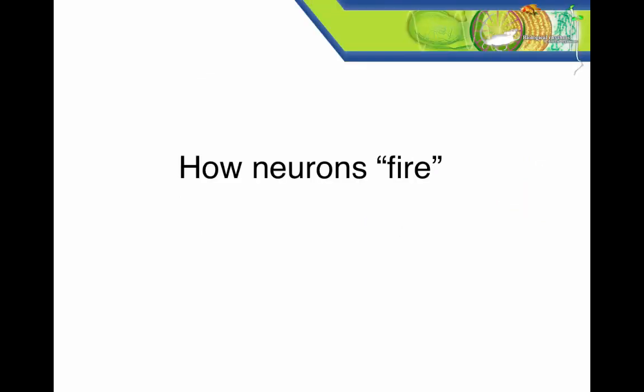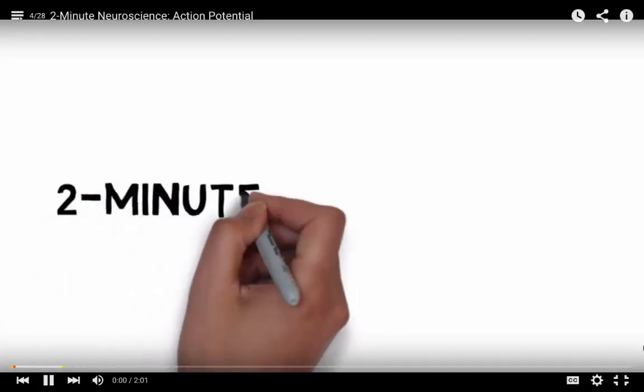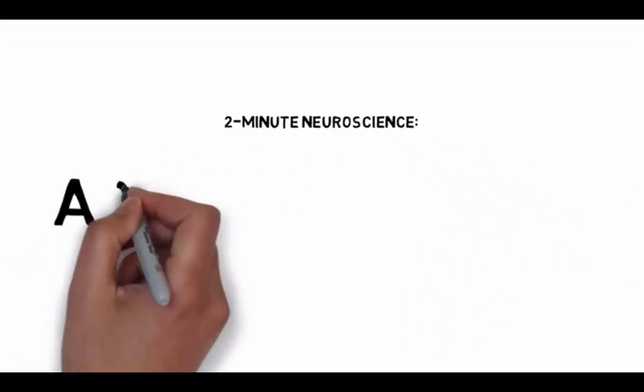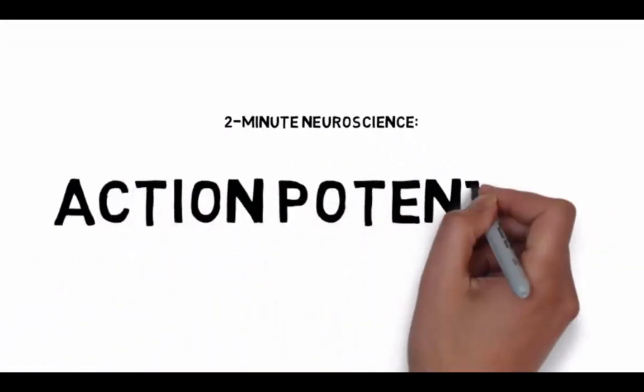Finally, we'll look at how neurons fire or produce the action potentials which generate the chemical communication at the synapse between two neurons that we just saw in the last clip. Welcome to Two Minute Neuroscience, where I simplistically explain neuroscience topics in two minutes or less. In this installment, I will discuss the action potential.